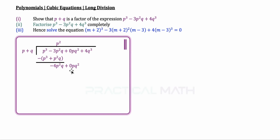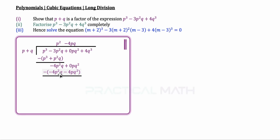We bring down the next term, which is 0pq squared. Now we need to get rid of negative 4p squared q. We multiply by negative 4pq, because negative 4pq multiplied by p gives us negative 4p squared q, and negative 4pq multiplied by q gives us negative 4pq squared. The first term cancels — double negative is positive, so negative 4p squared q plus 4p squared q is gone. Then 0 minus negative 4pq squared gives us positive 4pq squared. Bring down 4q cubed.